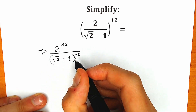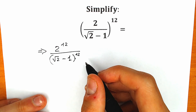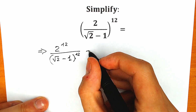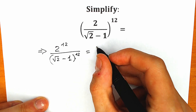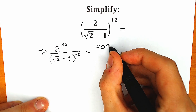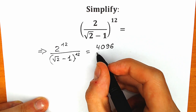Right now we can easily find 2 to the power 12 real quick, because 2 to the power 12 is equal to 4096. So 4096 is our numerator.